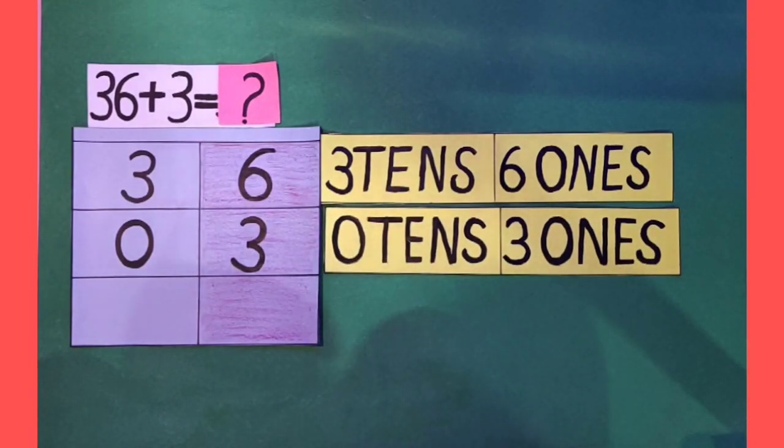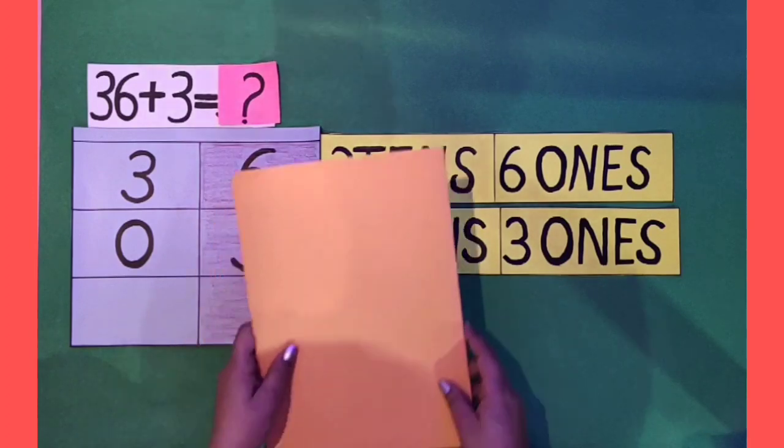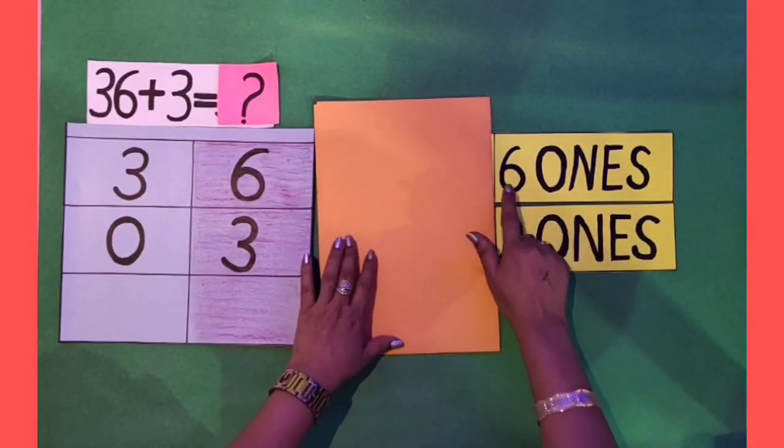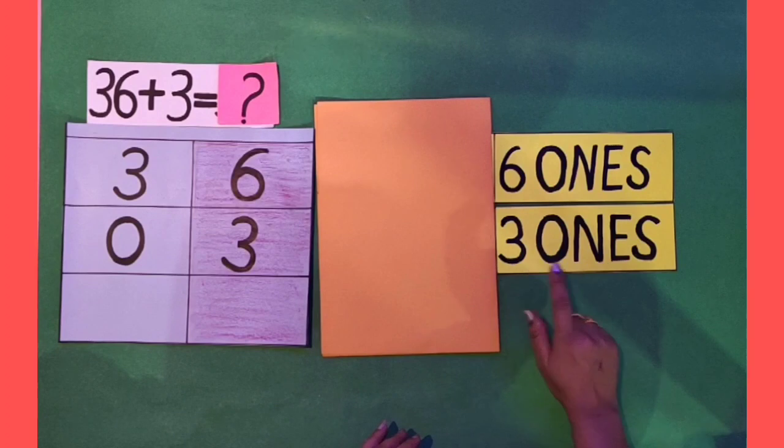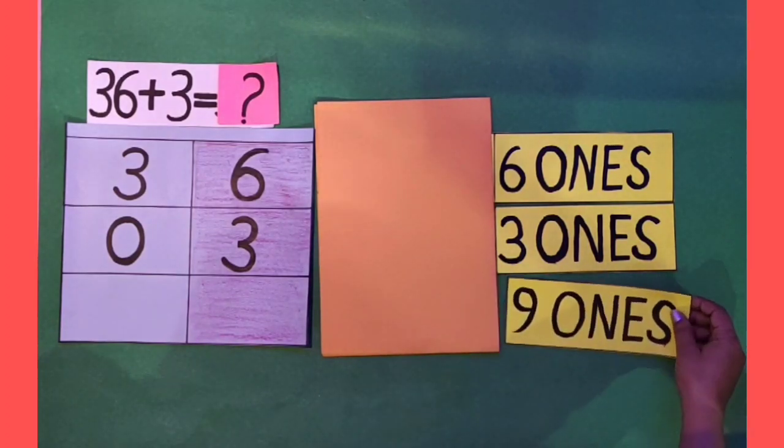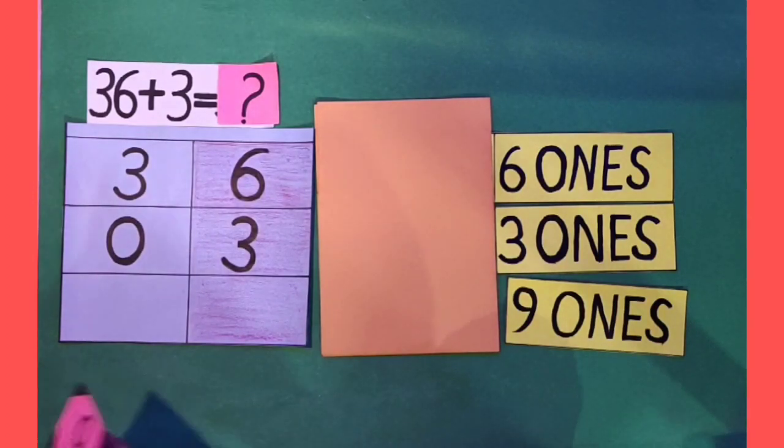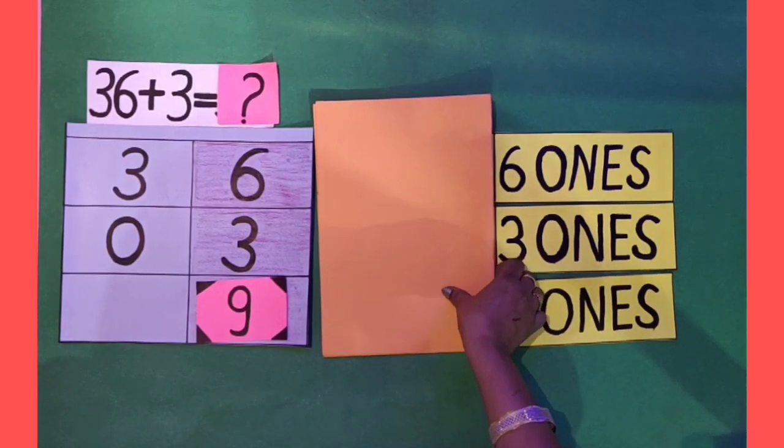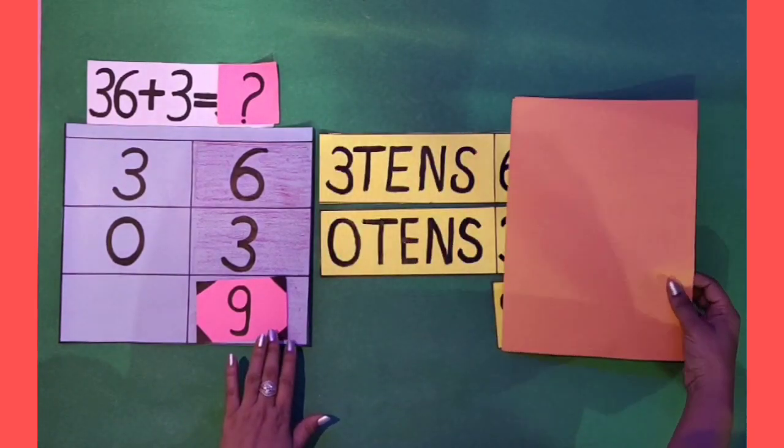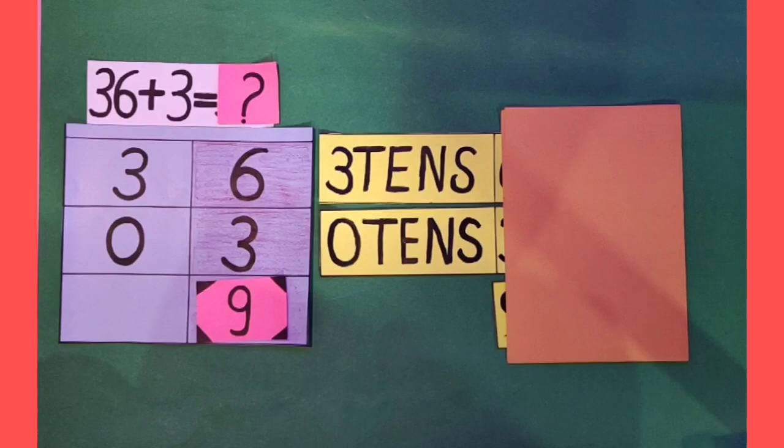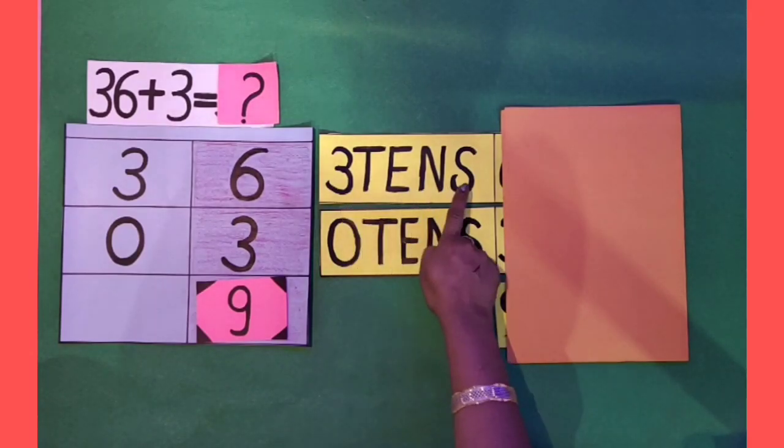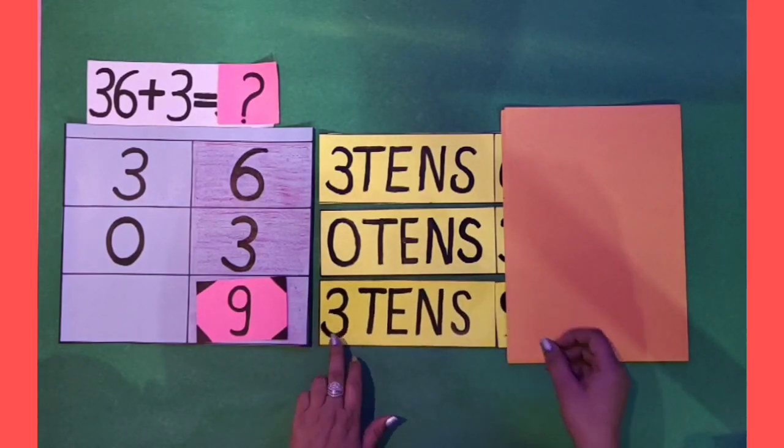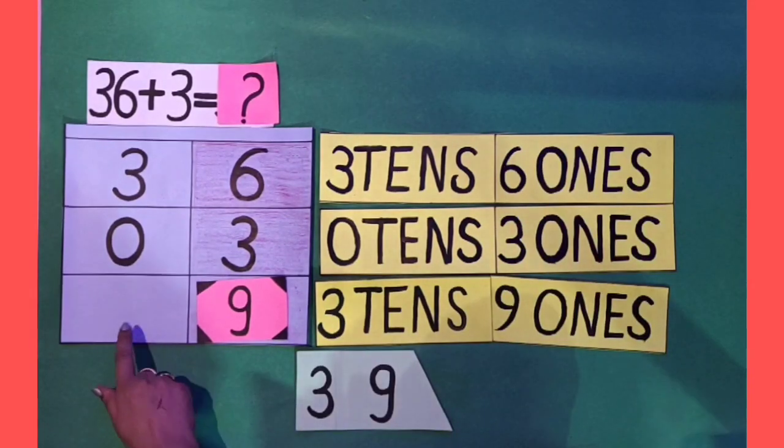Now, let's count these separately. 6 ones, 3 ones means 9 ones. So, here comes 9. Now, let's count these numbers. 3 tens, 0 tens means 3 tens. Here comes 3.